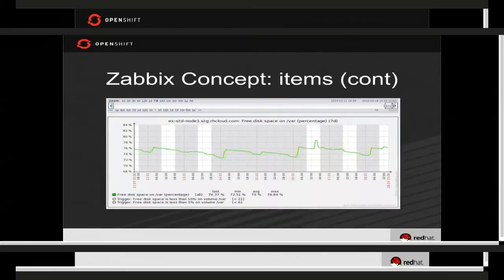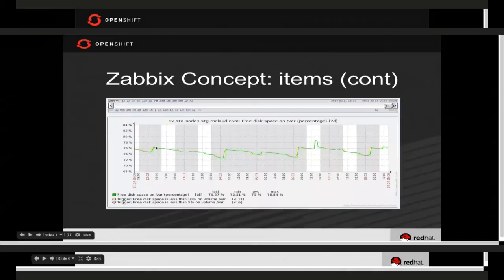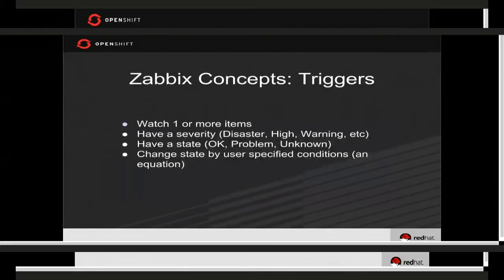Zabbix also has aggregated items, which add up or run equations on other items and store the result as their own value. For example, I can create an aggregated item across all /var items for all staging hosts, giving me a graph showing the actual free space across the entire environment. So we can see things not only on a per-instance basis, but also on a per host type or per environment basis.